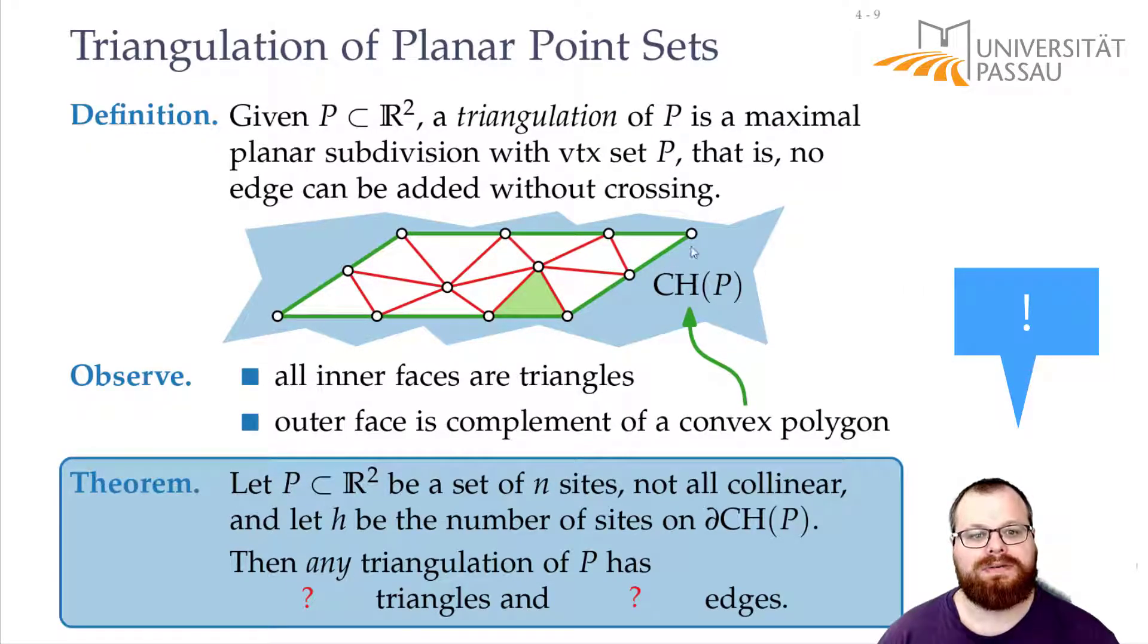If we have three vertices on the outer face then we don't have to add any. If we have four then we have to add one. If we have five then we have to add two and so on. We can just take one vertex and connect it to all but its two neighbors. And then we would get a maximal planar graph where all the faces are triangles. So the number of edges we have to add is h minus 3.